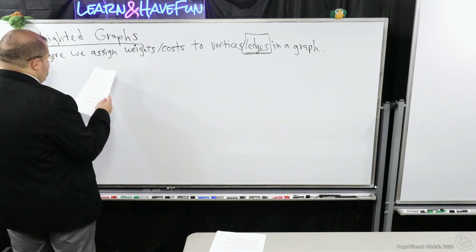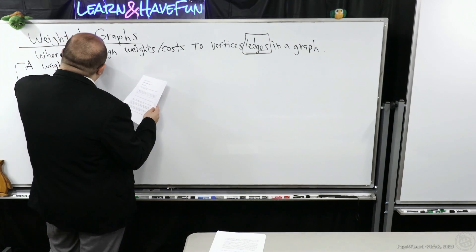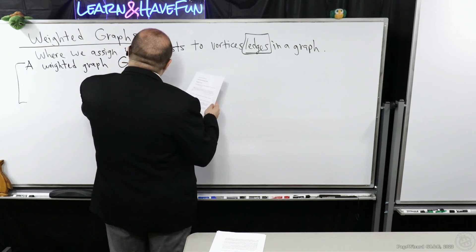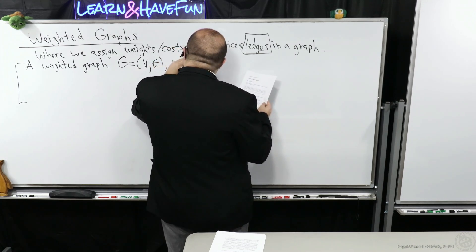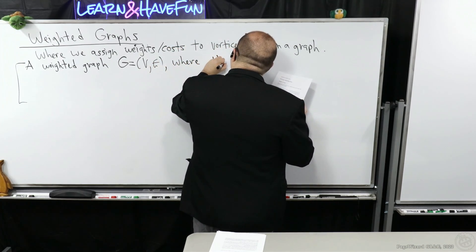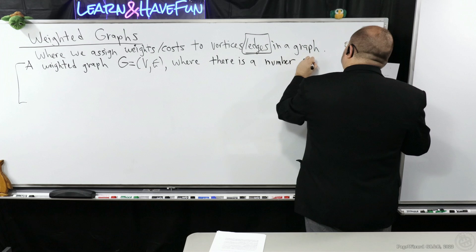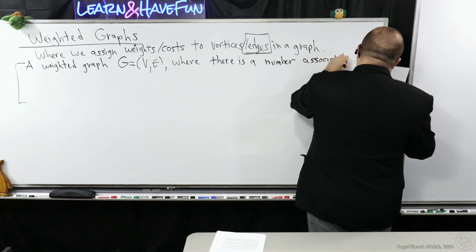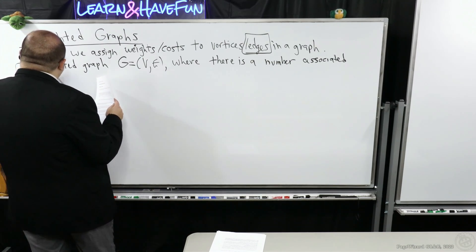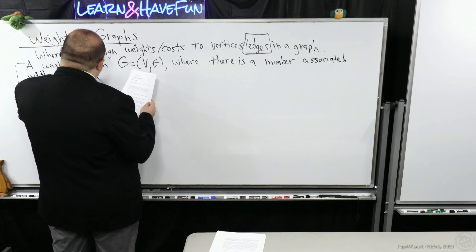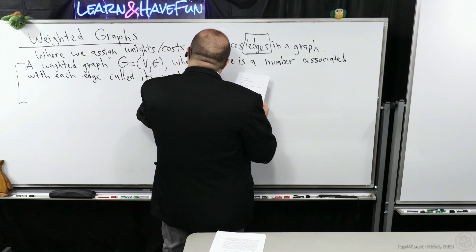So, just to give you kind of a definition here. A weighted graph G equals VE, where V is the set of vertices, E is the set of edges, where there is a number associated with each edge called its weight or cost.